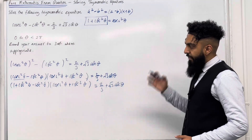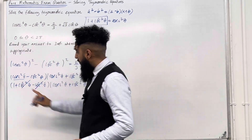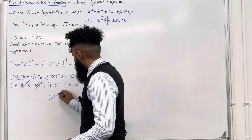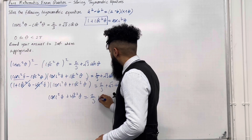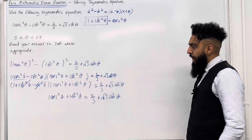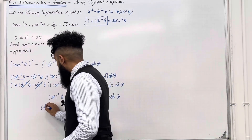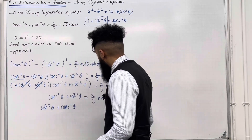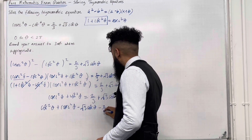Looking at the first bracket, the cot squared theta terms cancel out, leaving 1. So we have cosec squared theta plus cot squared theta equals 2 over 3 plus square root 3 cot theta. Taking everything to the left hand side: cot squared theta plus cosec squared theta minus square root 3 cot theta minus 2 over 3 equals 0.